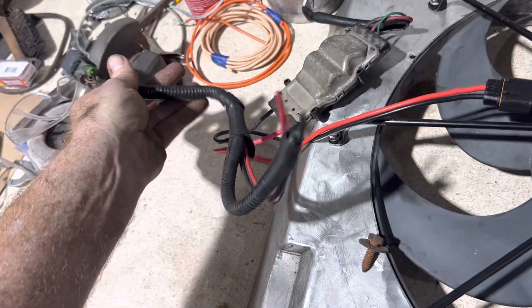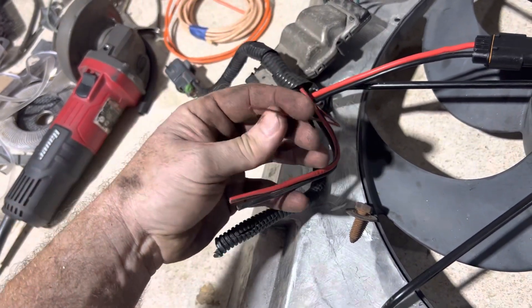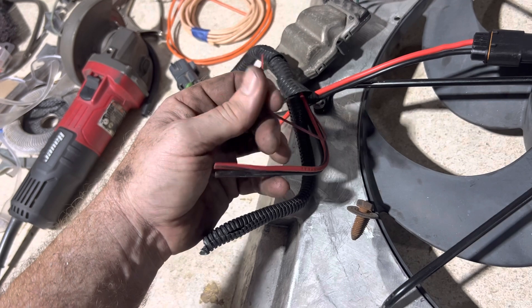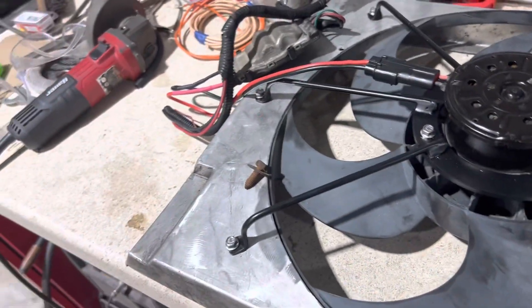So I got the cord here so I can wire this in together. And then I just got to do the end here, which is going to be a power, a good size ground, and then this will be the PWM wire. I got to wire into the Holly.